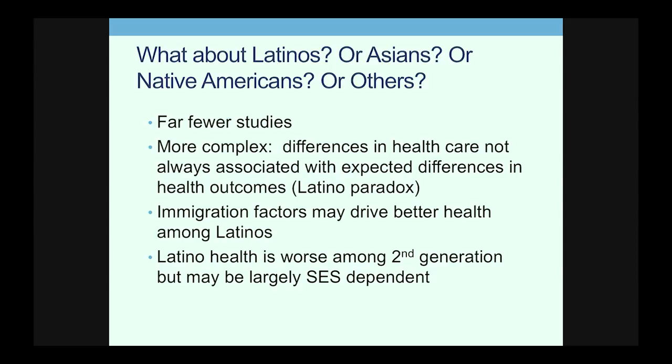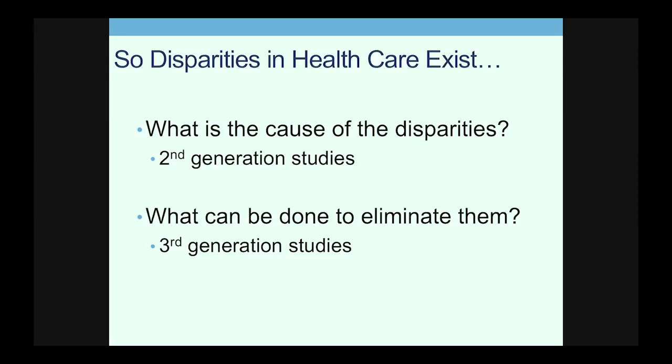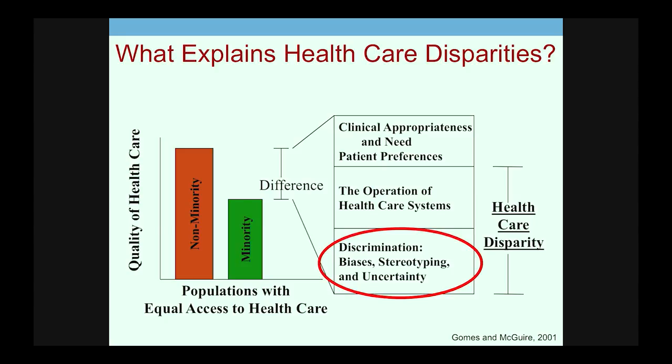When we talk about racial and ethnic disparities in health, we see far fewer studies — only in the last 10 years have there been more studies in these populations. It's a somewhat more complex narrative. For Latinos, much of this may be driven by immigration: foreign-born Latinos tend to have better outcomes, as do foreign-born Asians, compared to native-born counterparts. Foreign-born Asians and foreign-born Latinos have the highest life expectancy of any groups in the United States.